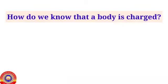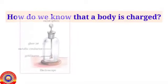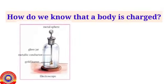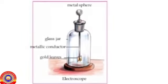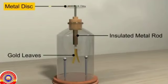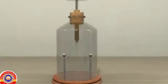How do we know that a body is charged? For that we use an electroscope. An electroscope is the instrument used to detect the presence of static electric charge. Observe the figure. Can you identify the parts? Metal spear, glass jar, metallic conductor, and gold leaves. Gold can be converted into very thin metal plates, so it is used in a gold leaf electroscope as gold leaves.